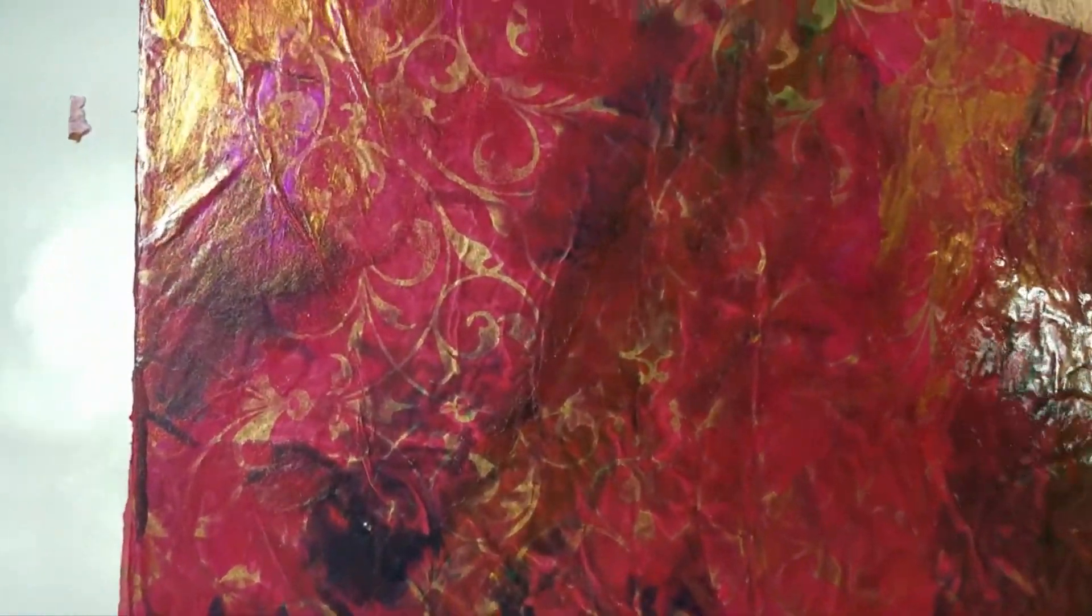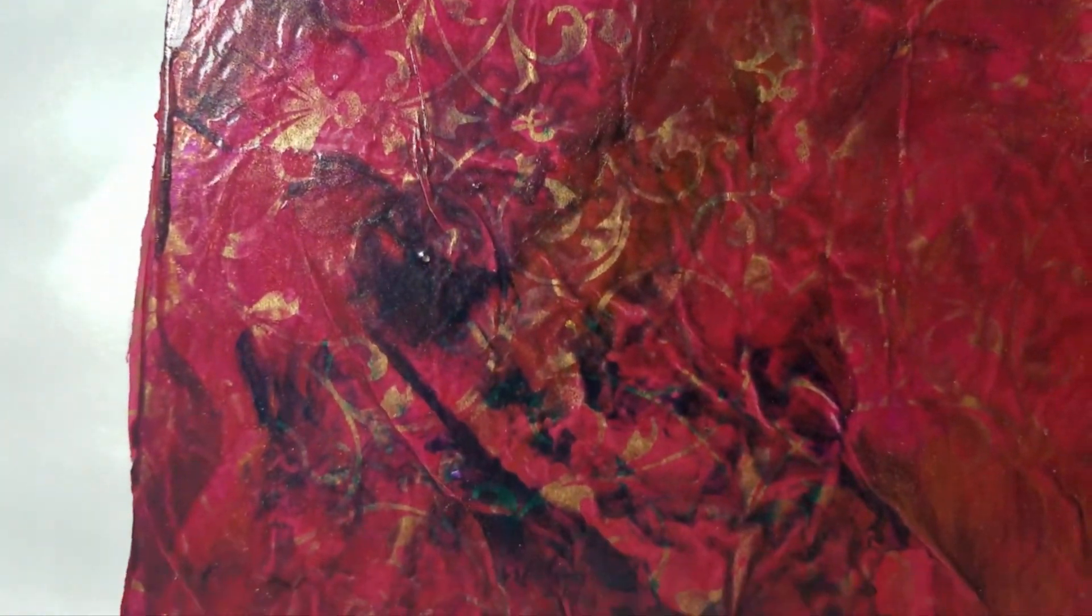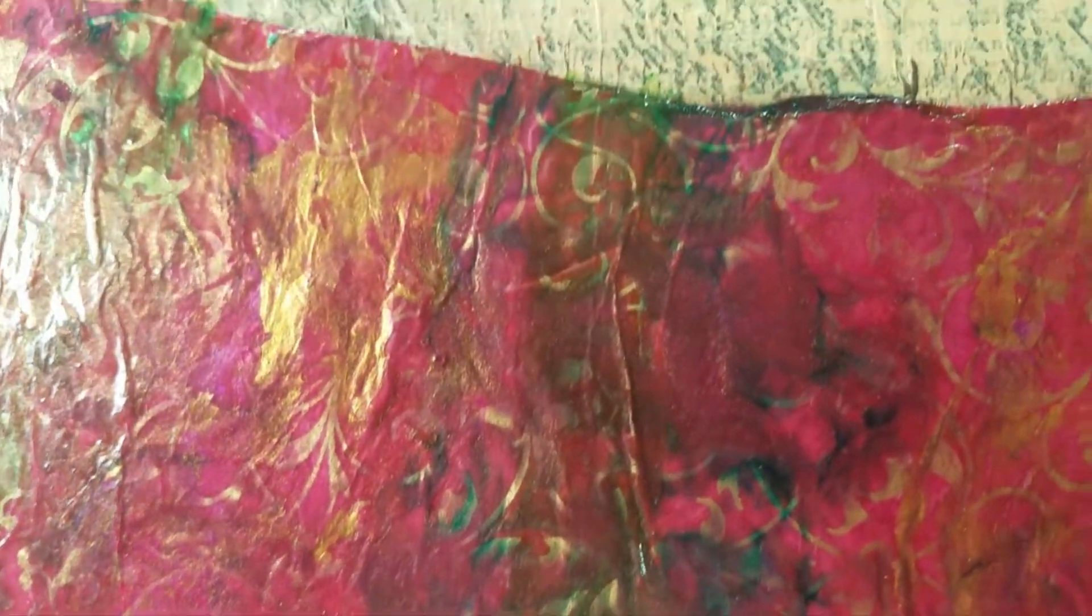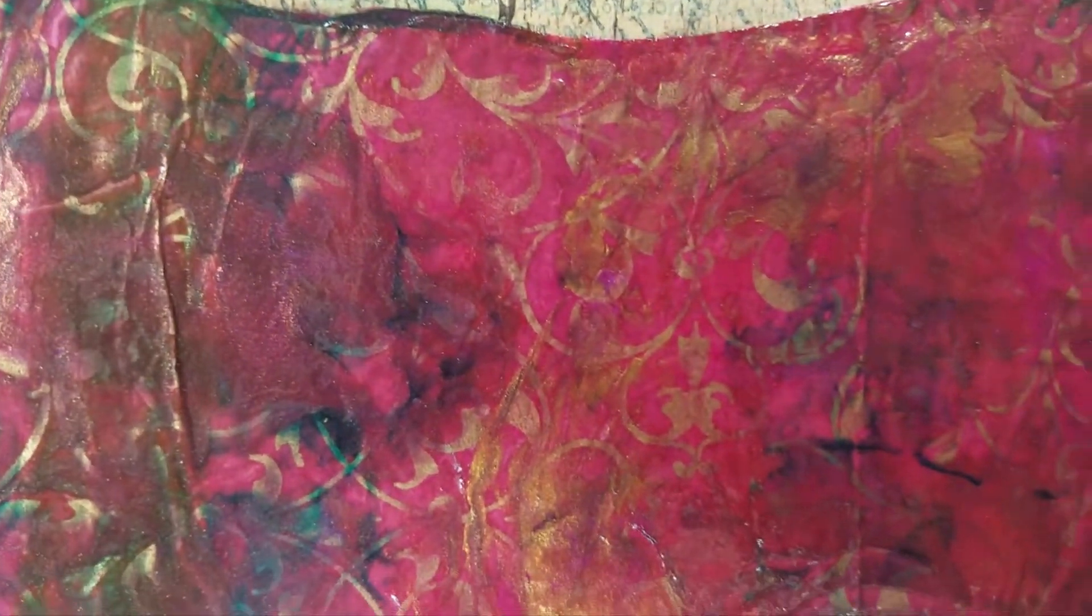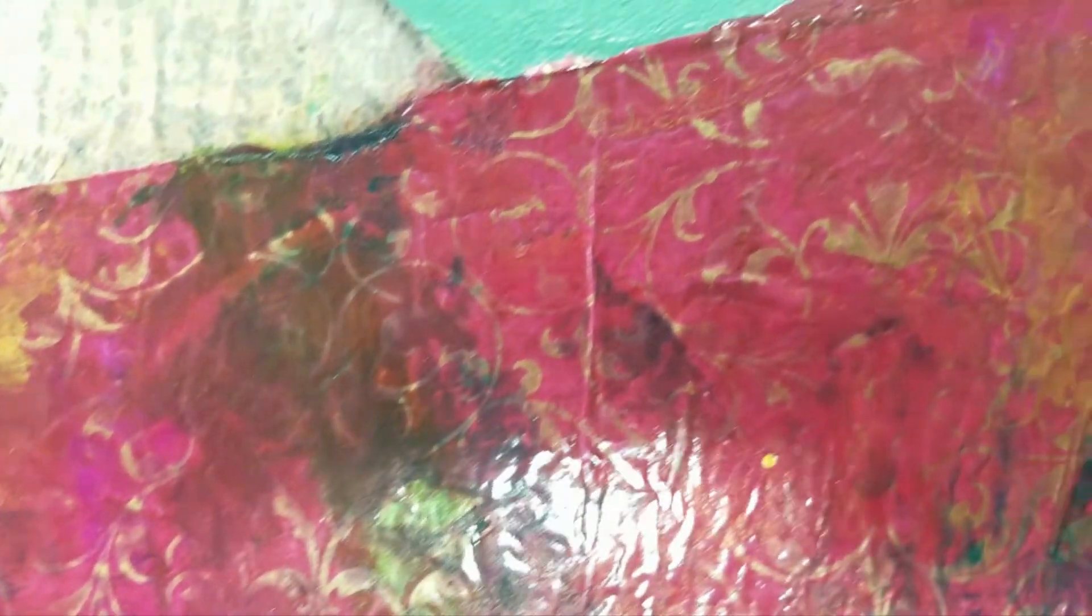So we can still see the original paper. We can see some reflectivity from the gold and where the greens got into the cracks.